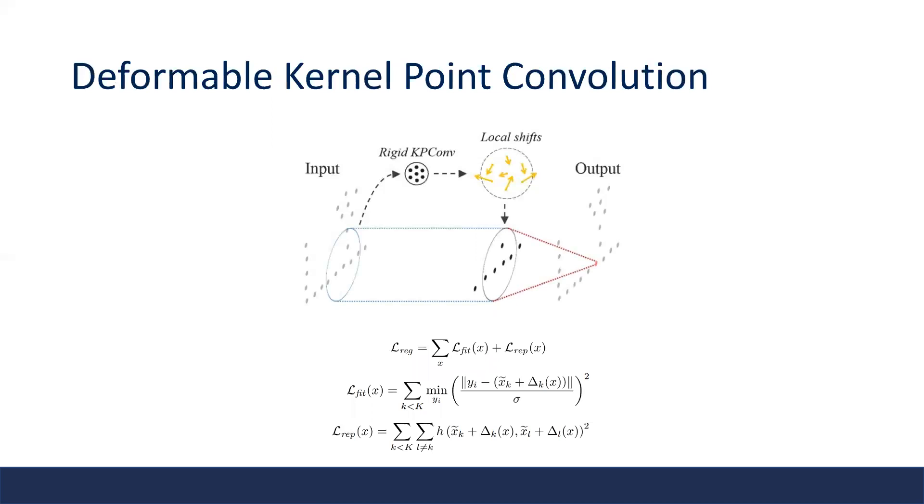However, the optimization trick in deformable 2D convolution that puts a smaller learning rate to these offsets doesn't work well in the case of KPConv. The authors found that these kernel points tend to get diffused from the center, and eventually there may be no kernel points inside the local neighborhood.